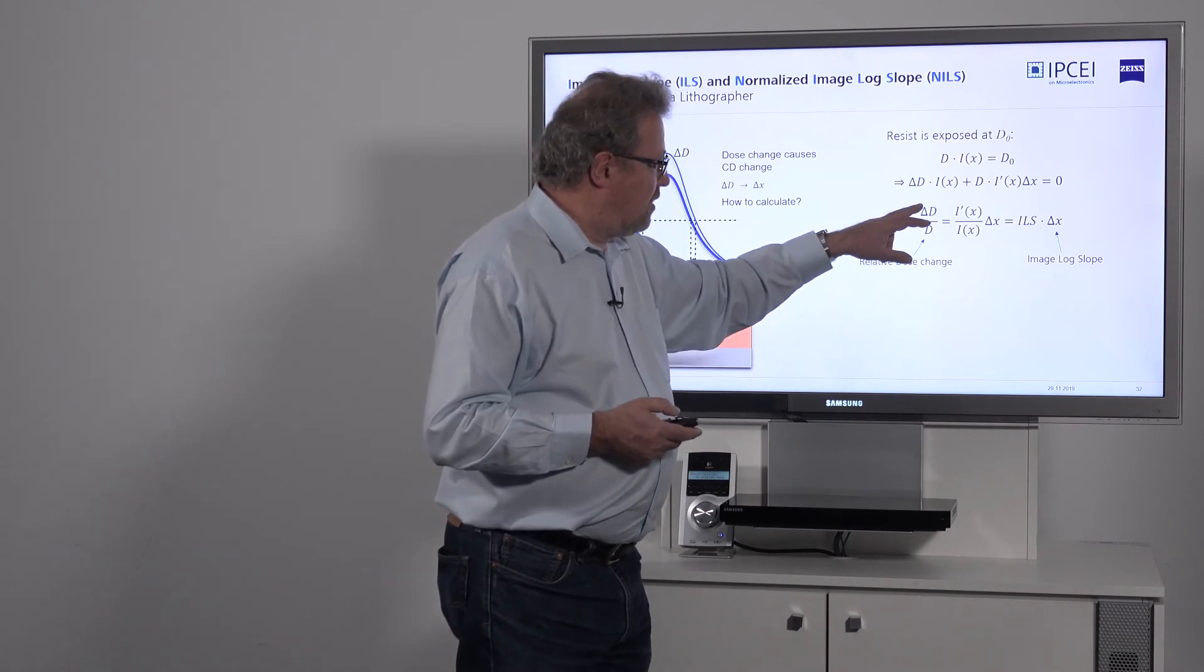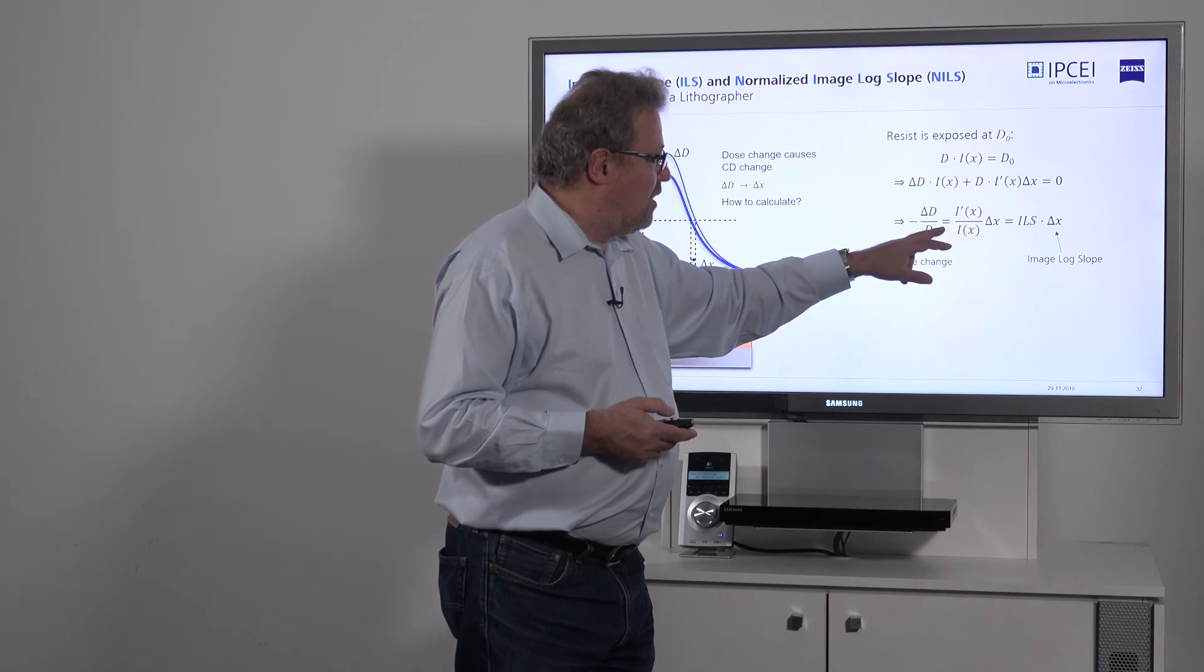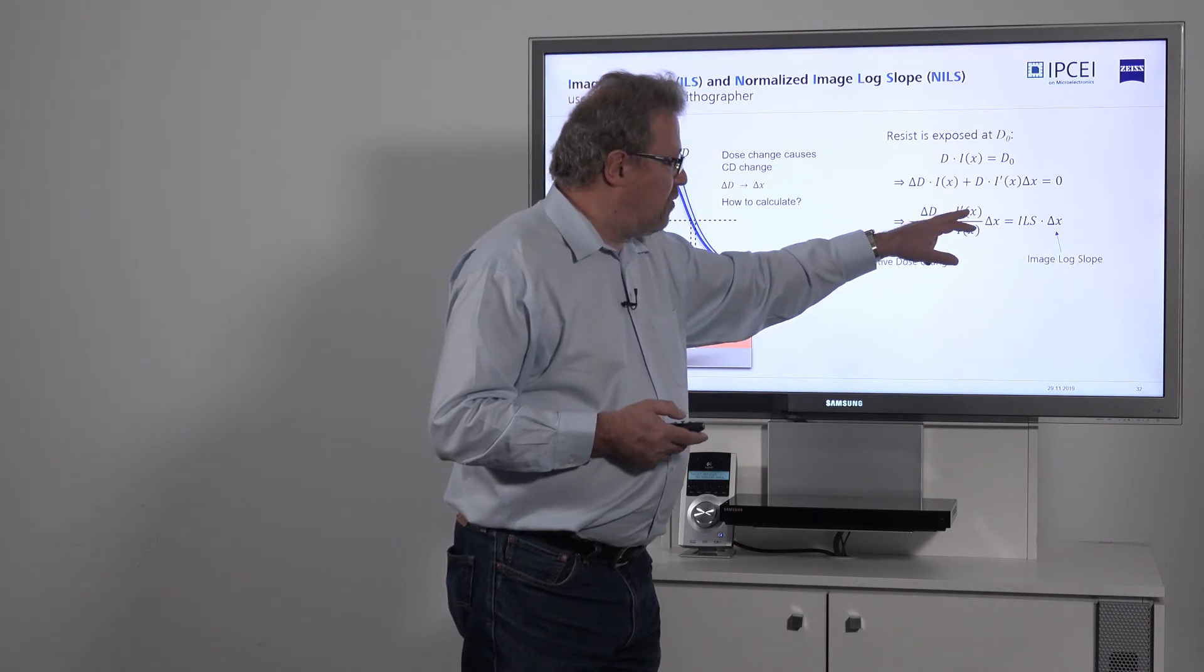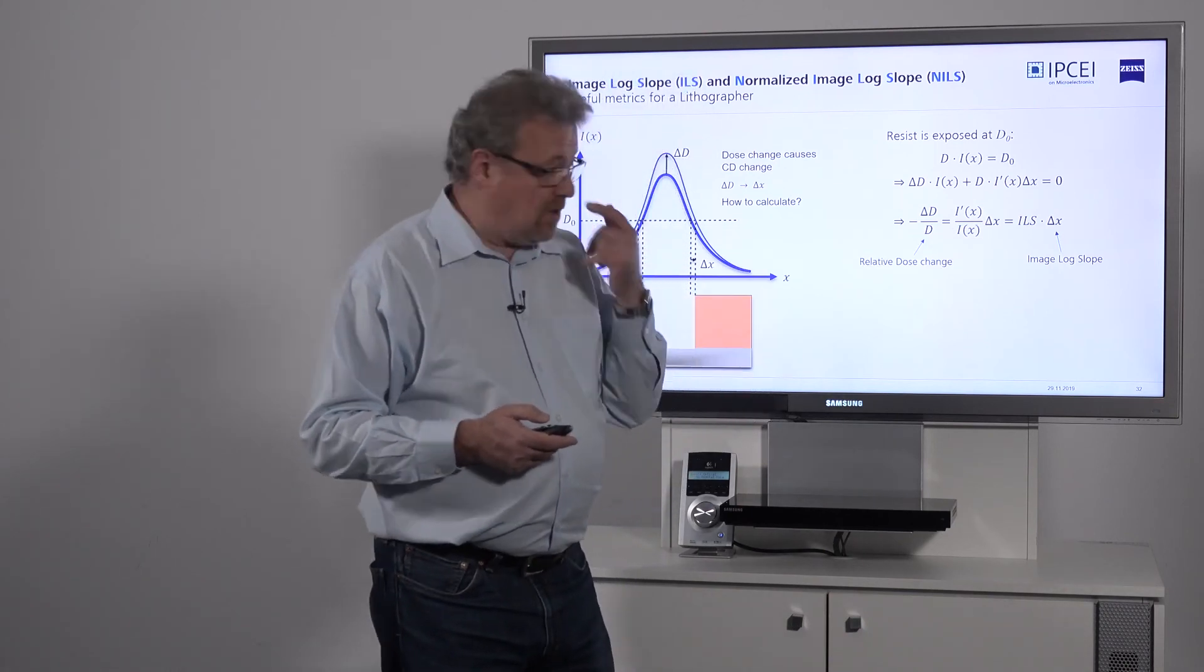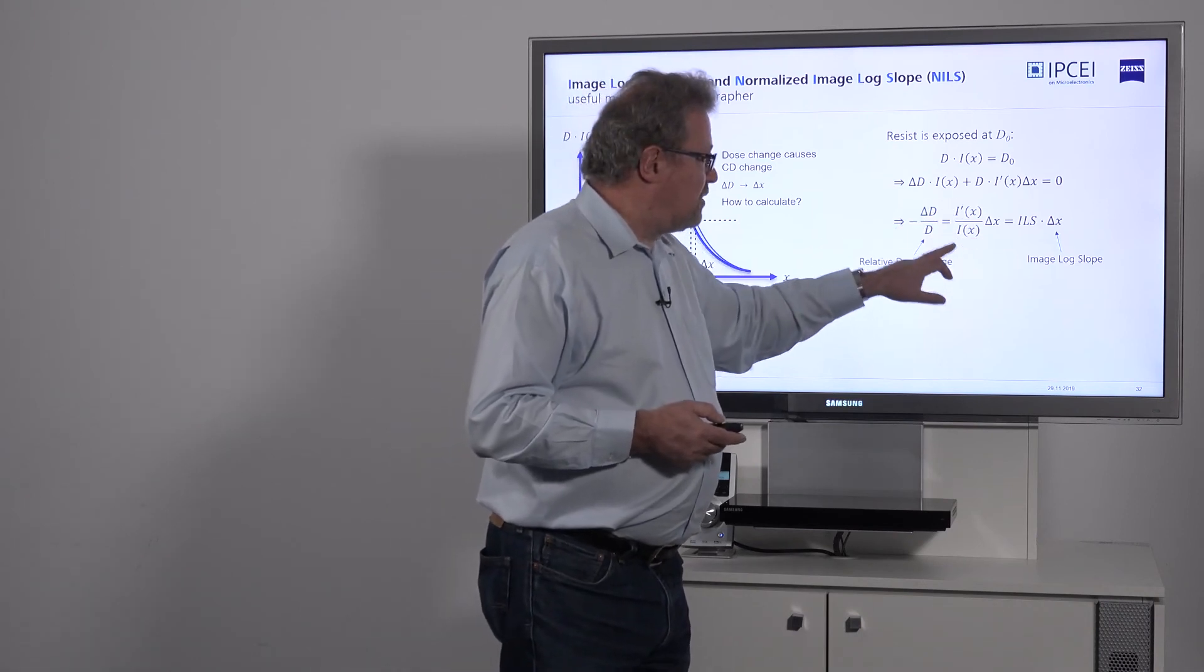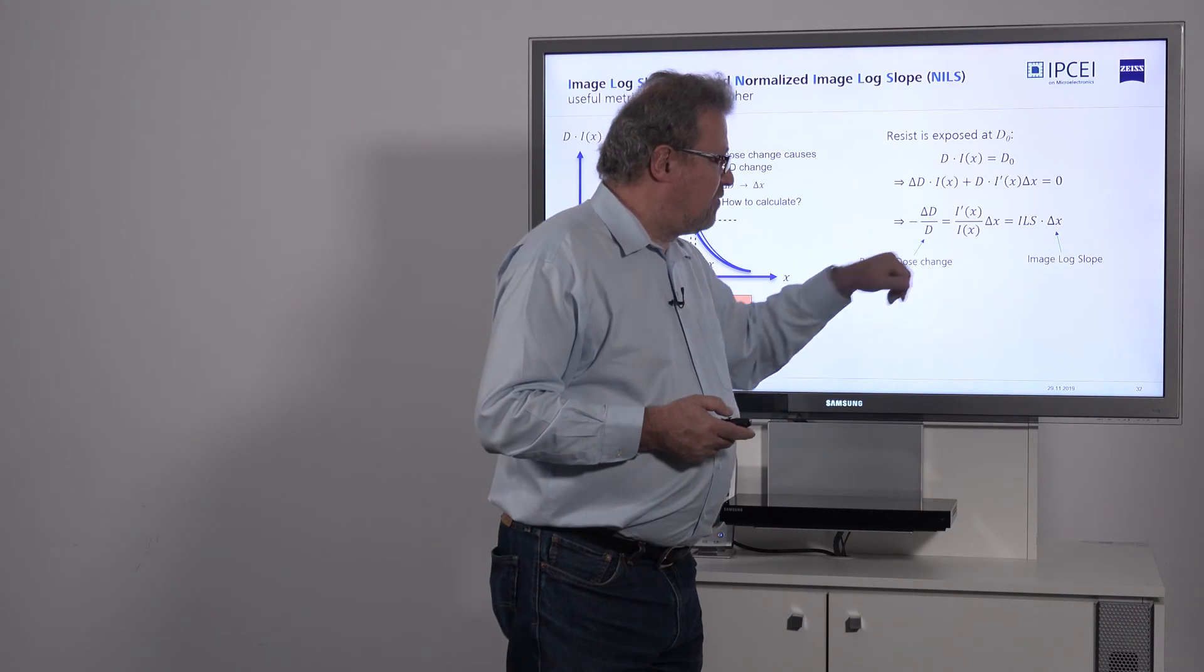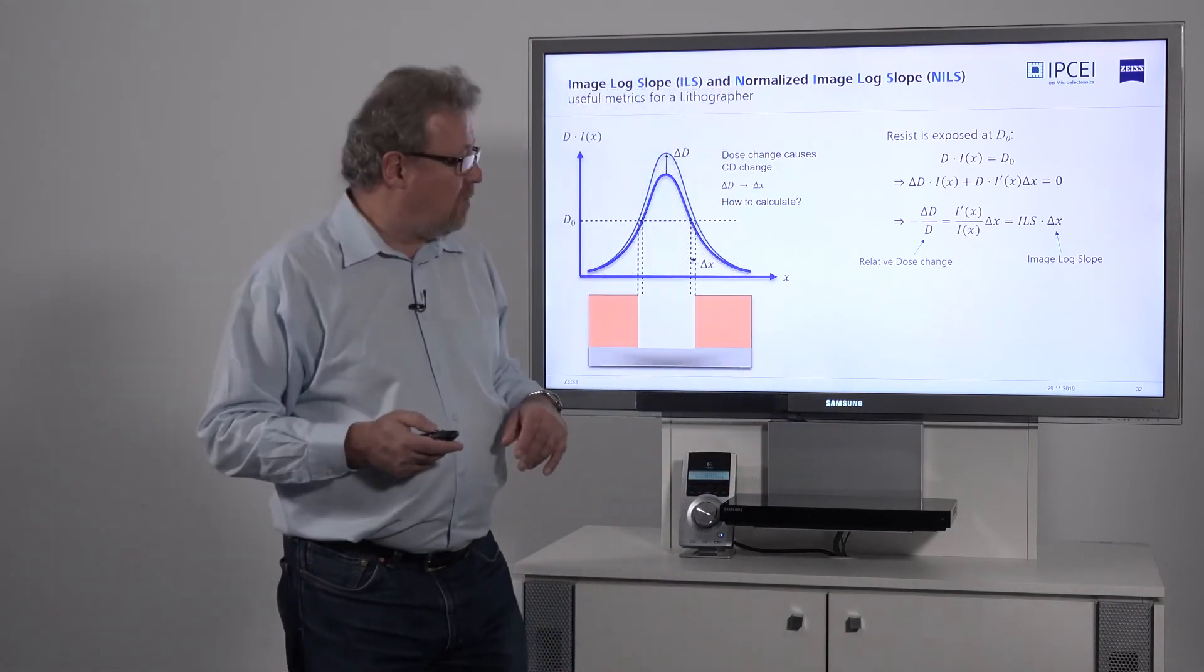If you solve this equation, you find that your relative dose change equals the slope of your aerial image divided by the aerial image times the edge change of your resist edge. This quantity—derivative of the aerial image divided by the aerial image—is called the image log slope.